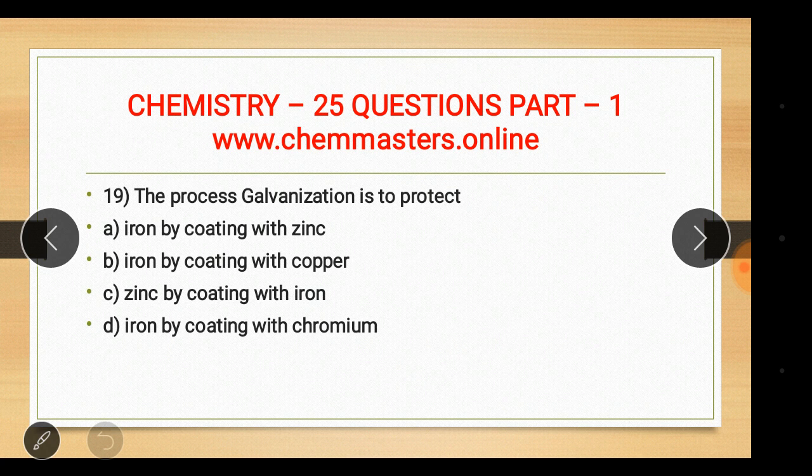Question nineteen: the process of galvanization is used to protect iron by coating it with zinc. The other options were iron coated with copper, zinc coated with iron, and iron coated with chromium.